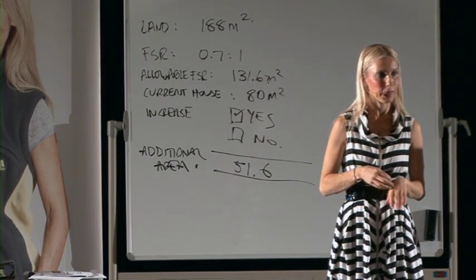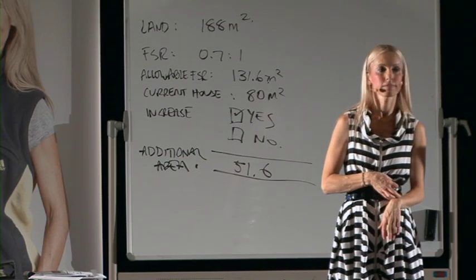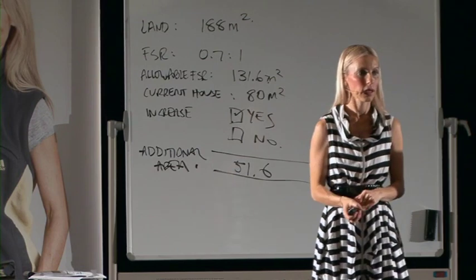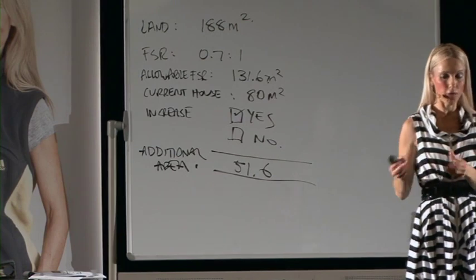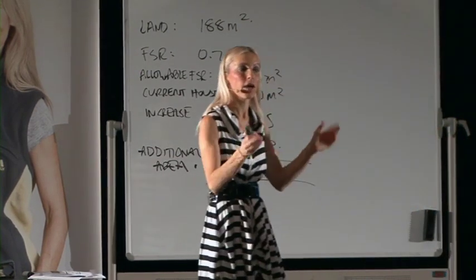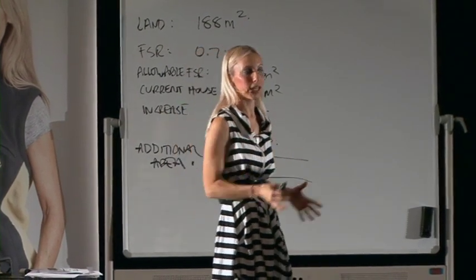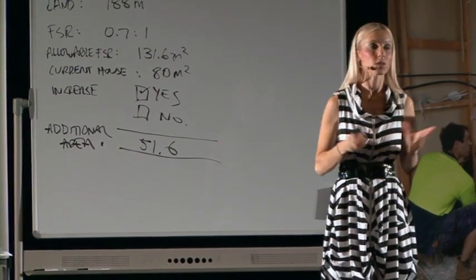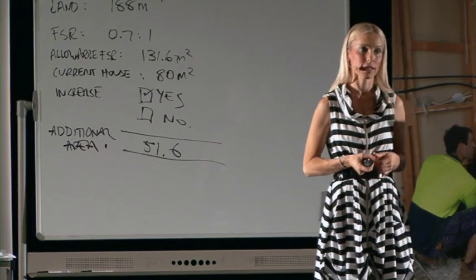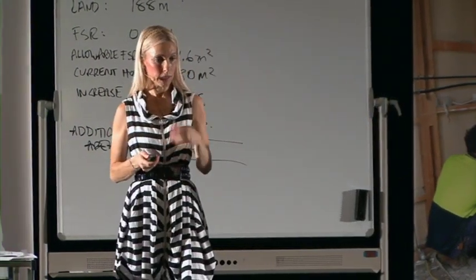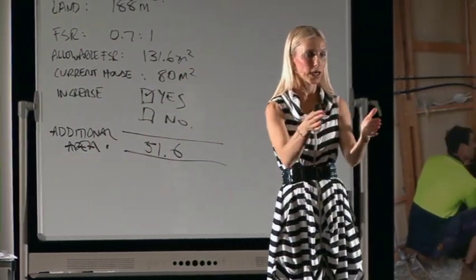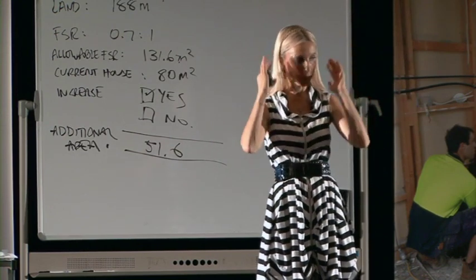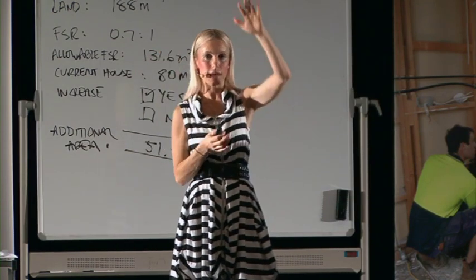Question: the calculator doesn't take into consideration setbacks — and in Melbourne in particular they're very particular about setbacks. That's exactly why you need to get your architect out on site. You'll first know you can get 51 square metres, and then you bring your architect out and ask: 'Are we going to have any issues going up, outwards, or backwards?' The architect handles calculating what complies with the height controls, side setbacks, rear setbacks, and landscaping ratio.